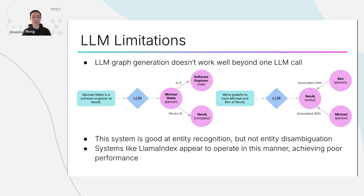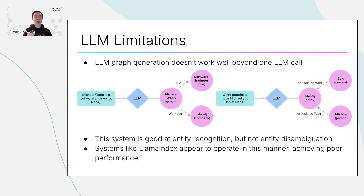So Neo4j isn't created as a company — it gets created with the same name but a different type, like a generic entity, which is not the same. And Michael could get created as 'Michael' rather than 'Michael Webb.' This causes huge problems because if you're putting all the output straight into a knowledge graph, you'll have a huge number of duplicates. If you try to run those complex questions, you might get a count of people working at Neo4j that's far greater than the appropriate number, or far smaller because they've all been tagged with differently labeled relationships.